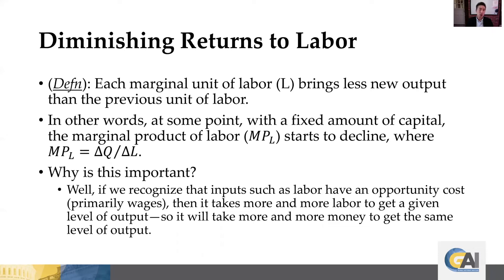Why is this important? If we recognize that inputs such as labor have an opportunity cost — typically wages — then it takes more and more units of labor to get a given level of output. In terms of cost, as you're using more and more labor, you're spending more and more money to make that same level of output. So we're starting to get a sense of how cost relates to labor.